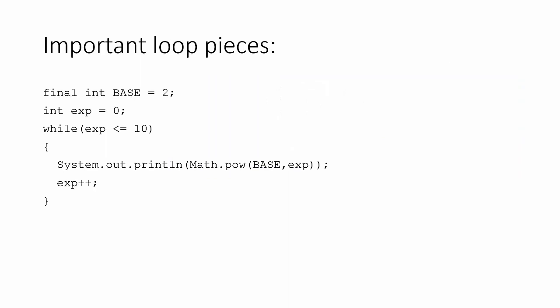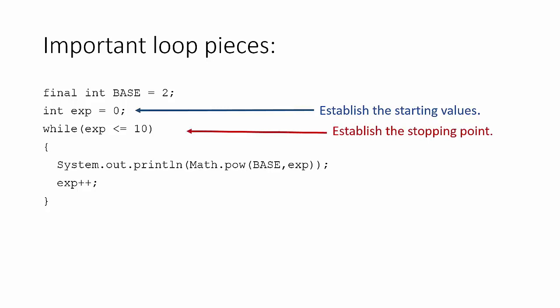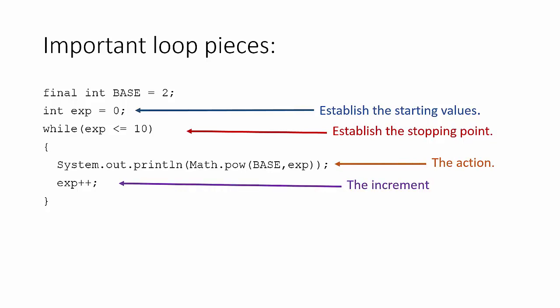Let's take a look at this loop and review our basic looping components. Every loop needs a starting value — somewhere the loop is going to start. Every loop needs a stopping point, a 'loop while' or 'keep doing this until' kind of point. Every loop is going to have some sort of action that we need to take — the whole purpose of our looping. And every loop is going to have some way of eventually adjusting the value that we're checking for — in this case, an incrementer.